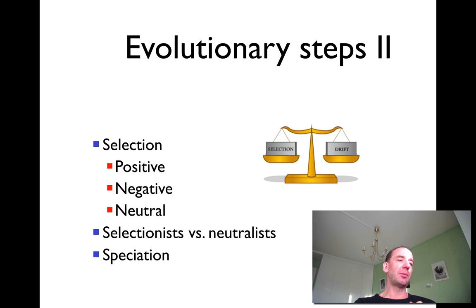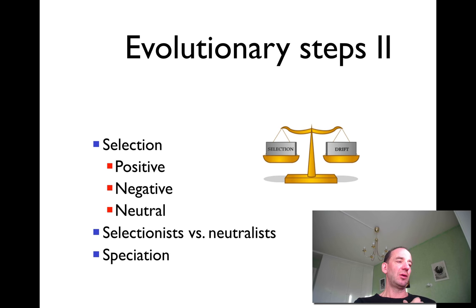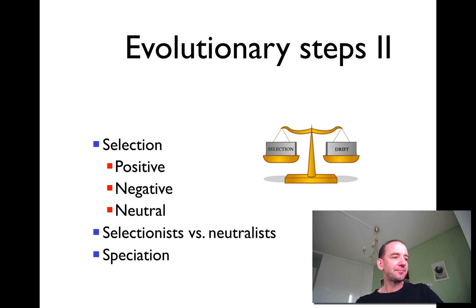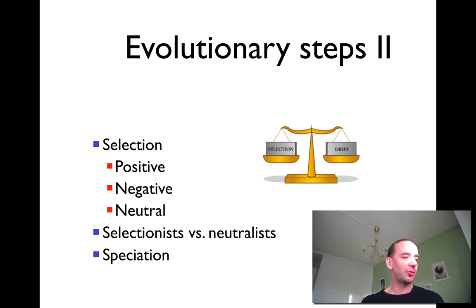And then there are a few mutations that are positive. For instance, there was probably positive selection in Europeans to be able to digest lactose — having the ability to drink milk as adults. That was probably an advantage because it meant they could get more food.